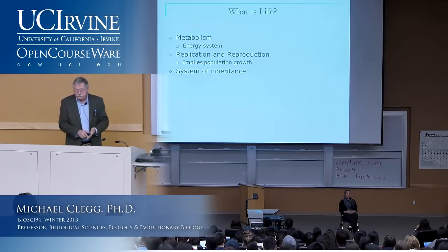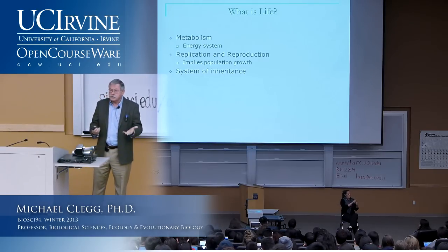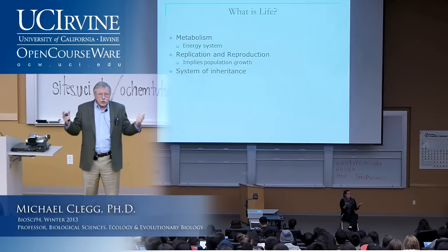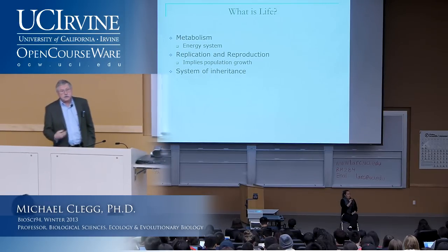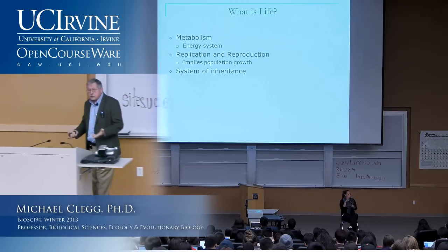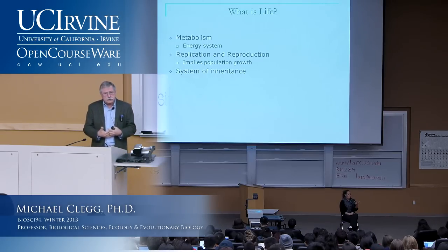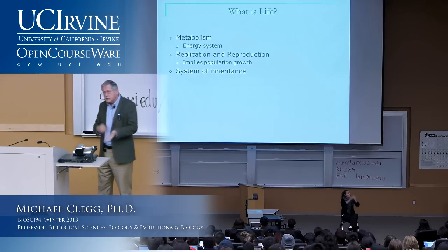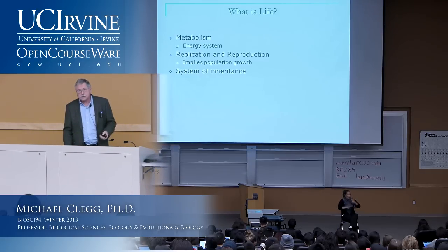Now, what is life? Life has several essential characteristics. One is metabolism — an energy system. You've got to have an energy system to provide for the growth and activity of cells. There has to be replication and reproduction, which implies the capacity for population growth. There has to be a system of information transfer — that is, an inheritance system. Those three properties are fundamental to life. Your textbook also lists the property to evolve — life has to be able to evolve, to change, to adapt to changing physical and biotic circumstances in the world.